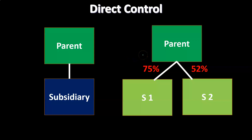We can have a bit more complexity with two subsidiaries — for example, a parent with 75 percent over S1 and direct control over S2 as well, both over the 51 percent threshold. Both of these cases would still be direct control. You can think of a parent-subsidiary relationship with more subsidiaries all owned over 51 percent, but it can get more complex when you consider indirect control.